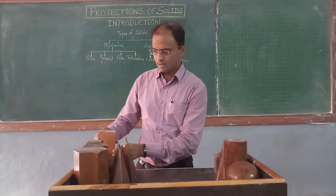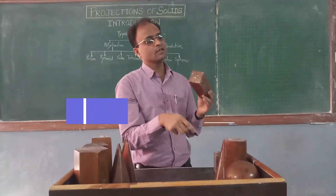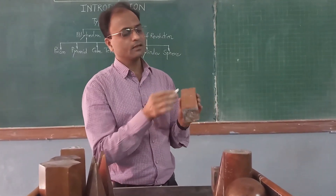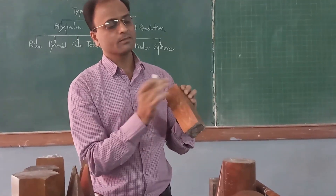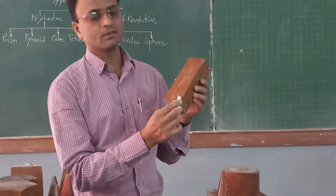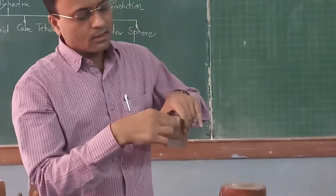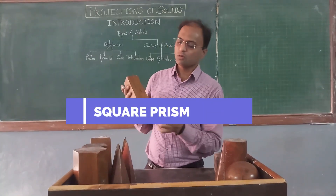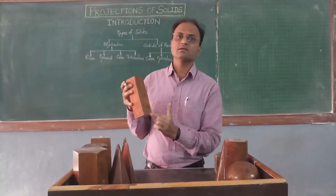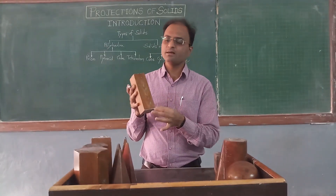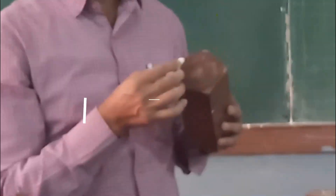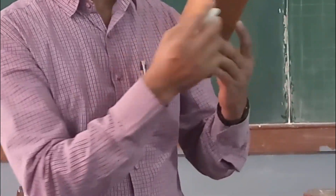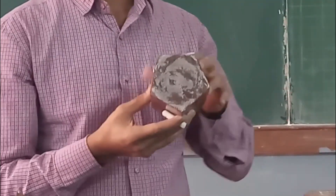This is the triangular prism. Next we have a rectangular or square prism, where the shape of the base and face is square, with four bounding rectangular surfaces. The imaginary line joining the center of the top to the center of the base is the axis. For drawing projections, we need the edge of base and height of axis. When the top and base are regular pentagons, we call it a pentagonal prism.